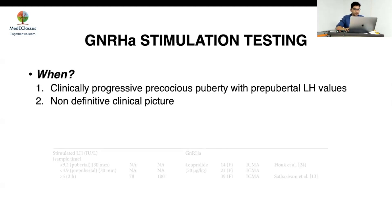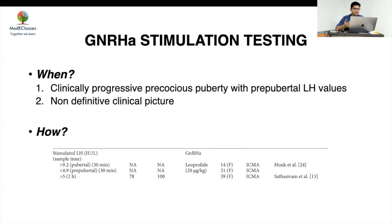Regarding how to perform stimulation testing: the guidelines mention leuprolide at 20 mcg/kg, and figures are also given for triptorelin. A peak LH value of more than 5 IU/L at more than two hours has 78% sensitivity but 100% specificity for diagnosing central precocious puberty. Compared to basal LH with 91% sensitivity and 100% specificity, the stimulation test misses around 22% of cases — any time you see a stimulated LH less than five.